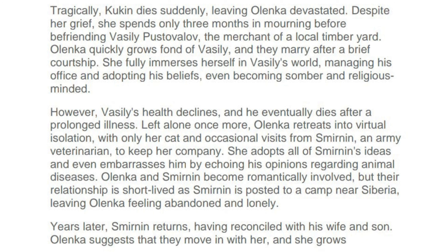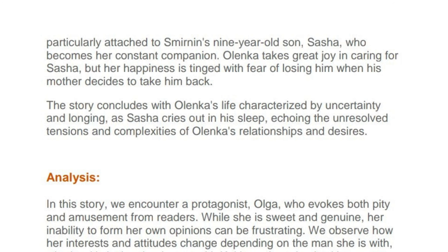Years later, Smyrnin returns, having reconciled with his wife and son. Olenka suggests that they move in with her, and she grows particularly attached to Smyrnin's nine-year-old son, Sasha, who becomes her constant companion. Olenka takes great joy in caring for Sasha, but her happiness is tinged with fear of losing him when his mother decides to take him back. The story concludes with Olenka's life characterized by uncertainty and longing, as Sasha cries out in his sleep, echoing the unresolved tensions and complexities of Olenka's relationships and desires.